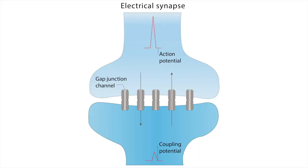Essentially the cytoplasm of the two cells are connected by gap junctions. This continuous cytoplasm allows molecules to move freely from one cell to another cell.